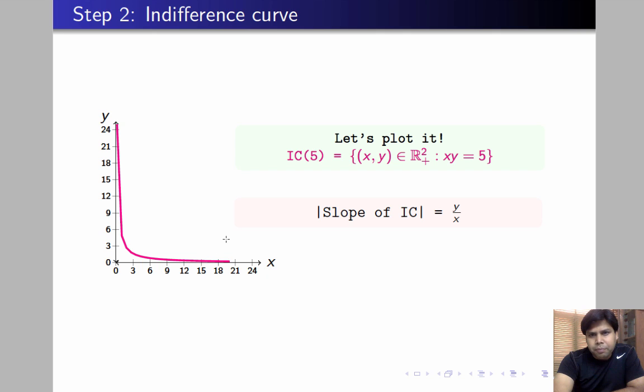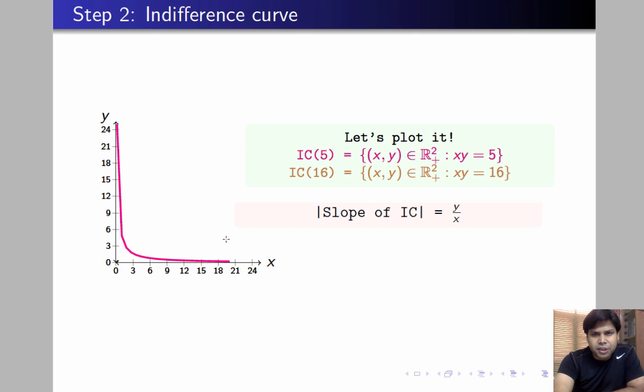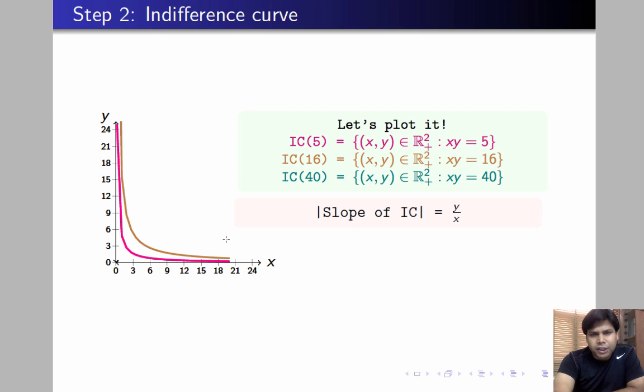Let's plot a couple more ICs. For u equal to 16, we are going to get a similar looking IC but shifted outwards in the northeast direction. If you plot for another satisfaction level, say 40, you will see another IC shifted towards the northeast direction.